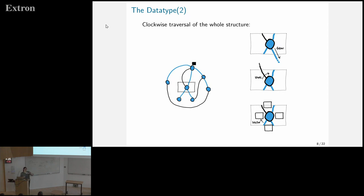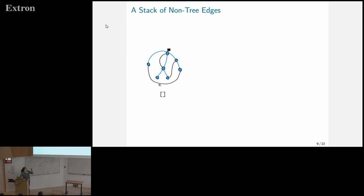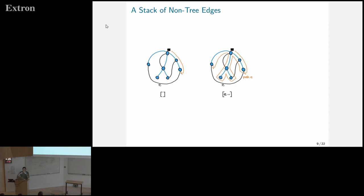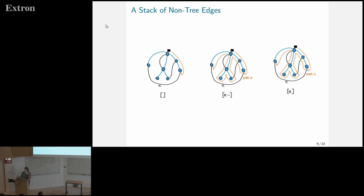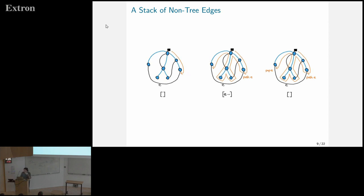So we store these additional edges somewhere else — specifically, we use a stack. I'll show you a traversal: we start from an empty stack, and each time we go along tree edges, when we meet a non-tree edge we push it onto the stack and jump over it. We continue the traversal, potentially adding more things on the stack, but we remove them again before we encounter the other end of the edge, and then we pop the edge again. So we have this tree and a kind of stack of information about the extra stuff on top.